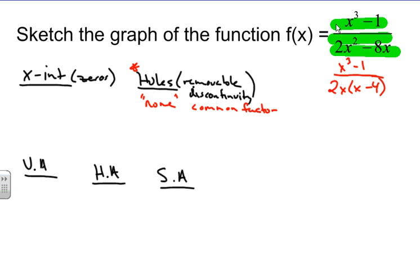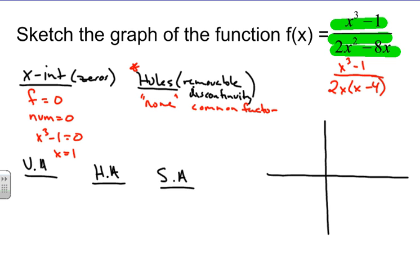To find x-intercepts, we set the function equal to 0. For a rational function, that's when the numerator equals 0, because it's when a fraction equals 0. So we take x cubed minus 1, set it equal to 0, and find that x equals 1 is where we have an x-intercept. I'll plot that point at (1, 0) on the graph.